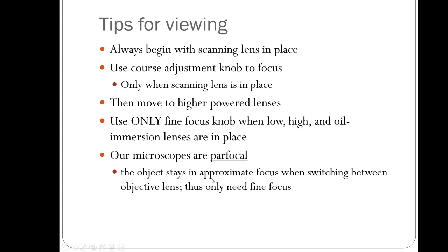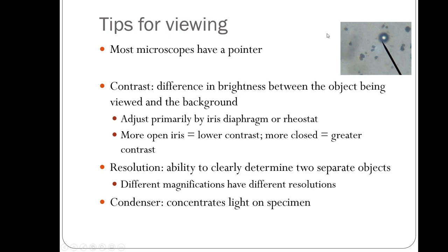Our microscopes are par focal, meaning an object stays in approximate focus when switching between objective lenses, so you only need the fine focus knob. Most microscopes also have a pointer — it looks like a line when you look through the eyepiece. Some students think it's a problem, but it's there so you can point to whatever you're looking at and show it to someone else as a landmark.